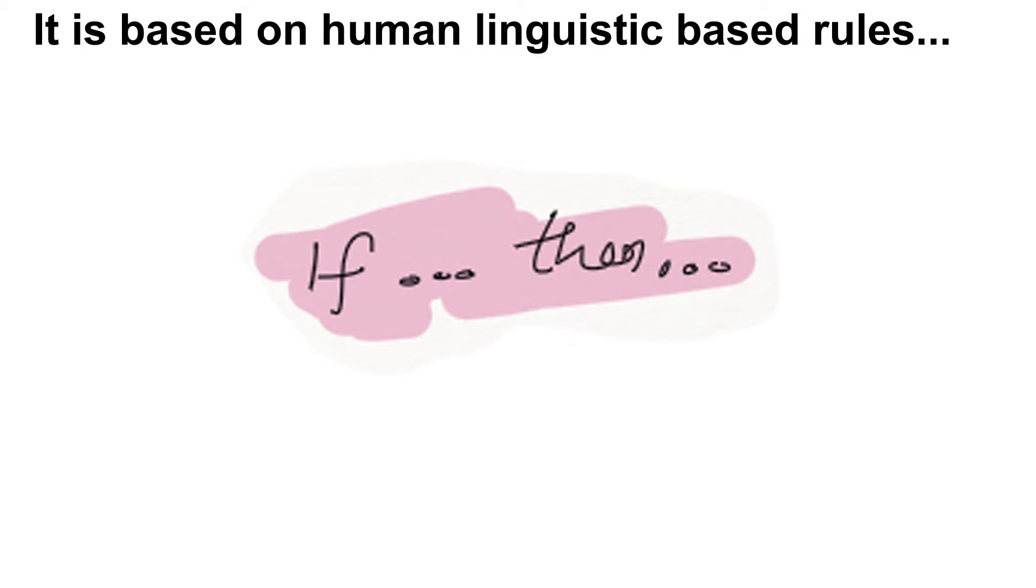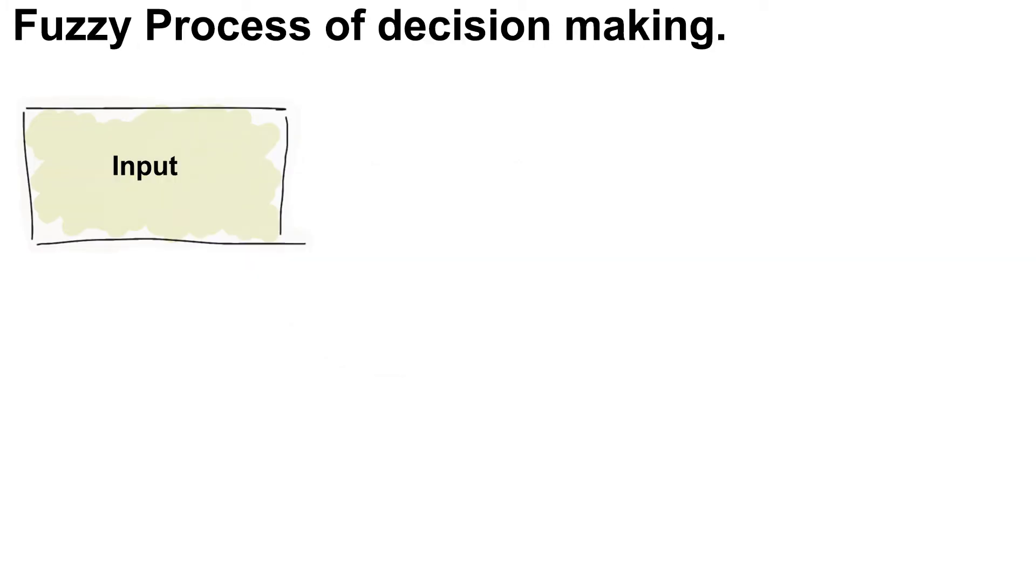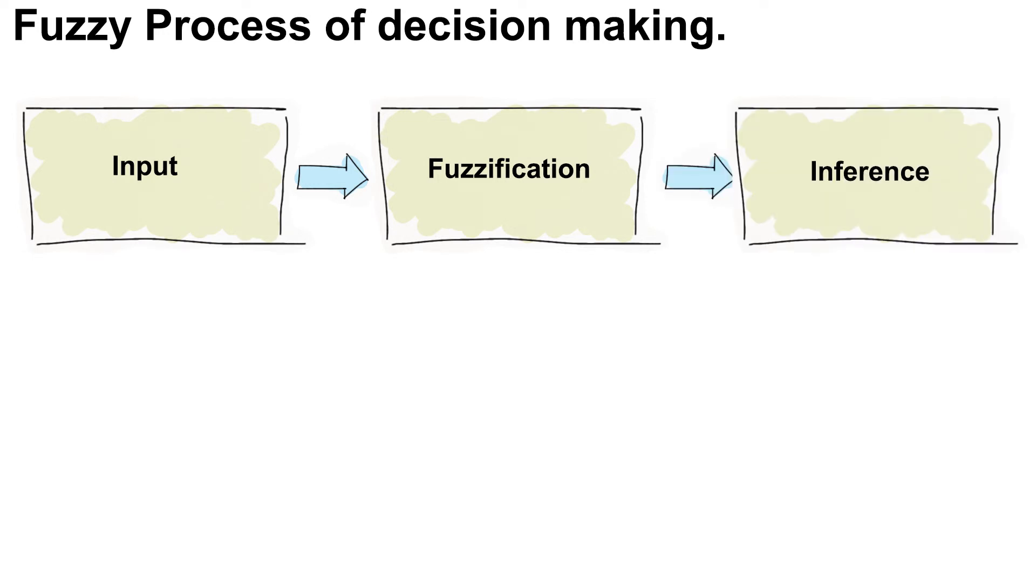Now, let's see the fuzzy process of decision making. A fuzzy system receives a crisp input from its sensors. The system then uses the membership functions to produce fuzzy sets. The inference engine uses these fuzzy values to identify applicable rules.